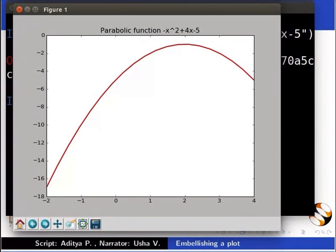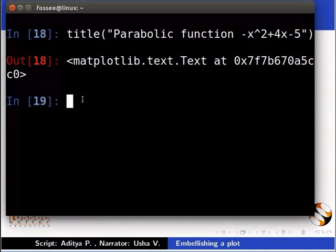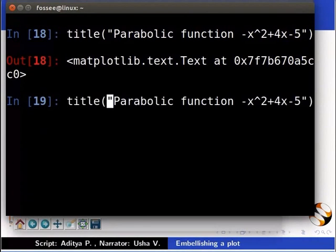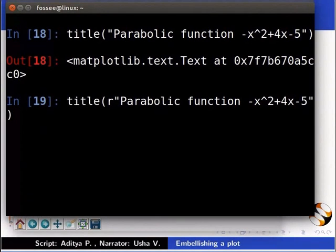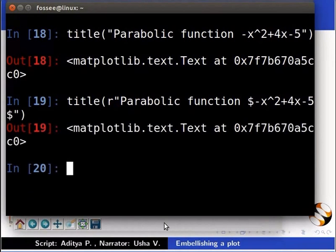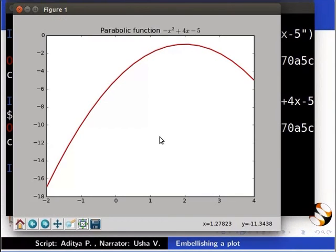It would look even more shabby if there were fractions and complex functions. Let us write the title in latex format for a neater look. For latex format, we put a dollar sign before and after the string. Type title inside the brackets inside inverted commas parabolic function dollar minus x square plus 4x minus 5 dollar. Here, r means that the string is to be treated as a raw string. It will ignore all escape codes. As we can see that the polynomial in the title is now formatted.